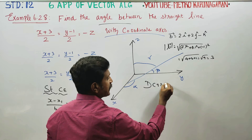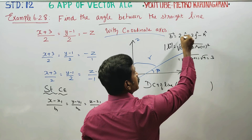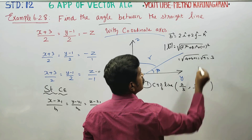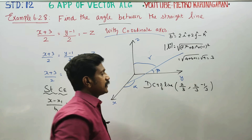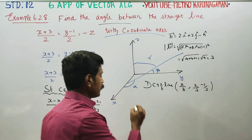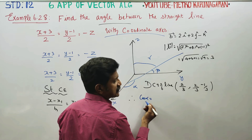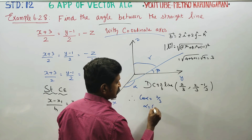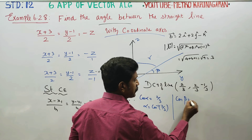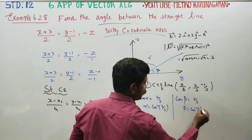The direction cosines of the line are calculated using the formula: direction ratio divided by magnitude. So the direction cosines are 2 by 3, 2 by 3, and minus 1 by 3. Therefore, cos alpha = 2 by 3, so alpha = cos inverse of 2 by 3. Similarly, cos beta = 2 by 3, so beta = cos inverse of 2 by 3.